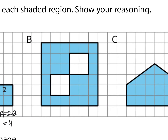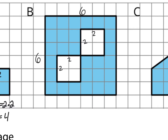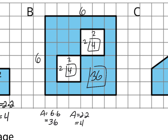Now, shifting focus to B. Our big square has dimensions of 6 by 6, and our little squares have 2 by 2 dimensions. The area of the big square is 6 times 6, which is 36. We have 2 of these 2 by 2 squares, each with an area of 4. The big blue region is 36, but we need to subtract those two 4s. So 36 minus 8 gives us a final solution of 28 square units.